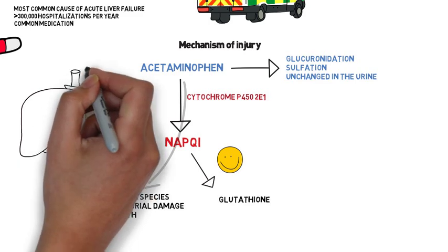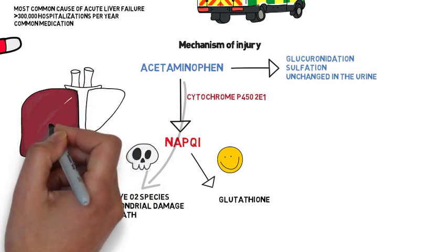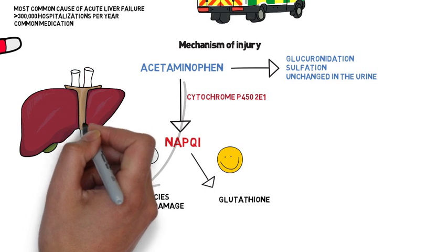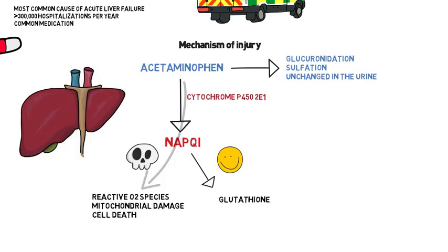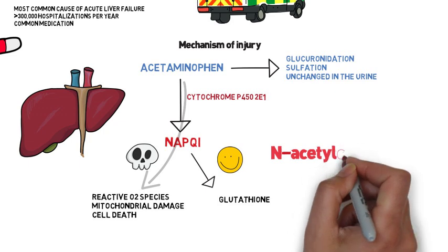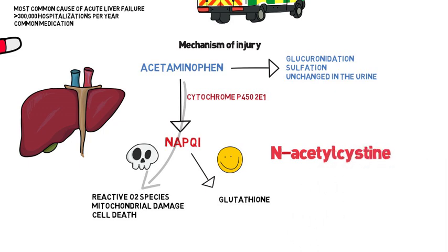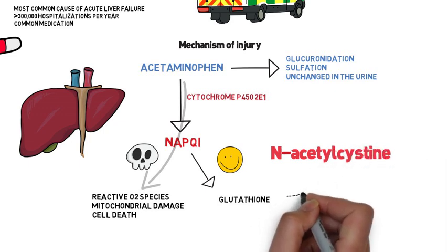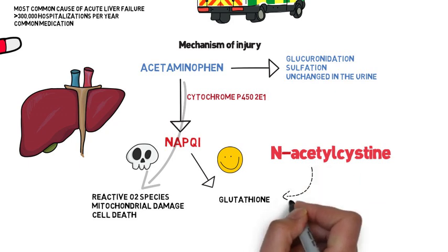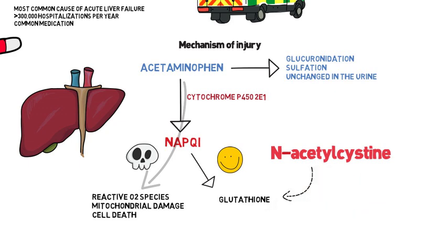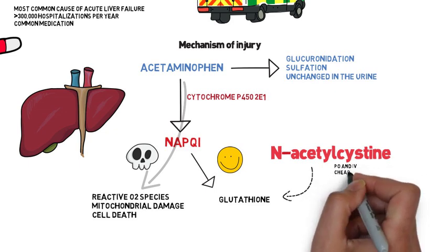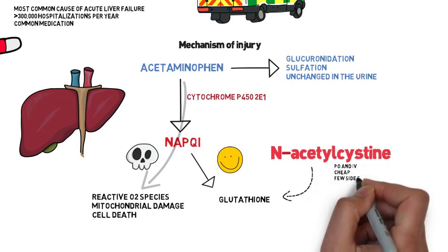So you're either worried that your patient has liver injury, or your patient does have liver injury — what can we do about it? We have an antidote called N-acetylcysteine, or NAC. The way it works is it repletes glutathione stores, thereby decreasing the amount of free NAPQI that can cause problems. It comes in PO and IV form, it's very cheap, and there are very few side effects.